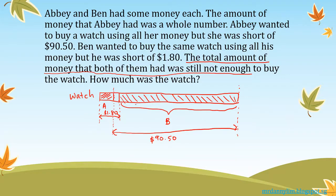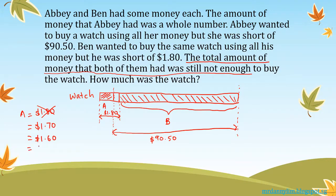Let's focus on Ben. Ben is short of $1.80. Now, if Abby had $1.80, together they would have enough to buy the watch. So Abby definitely has less than $1.80 — she could have $1.70, $1.60, $1.50, and so on. She needs to have less than $1.80, otherwise they would already be able to buy the watch. This underlying clue is very important.